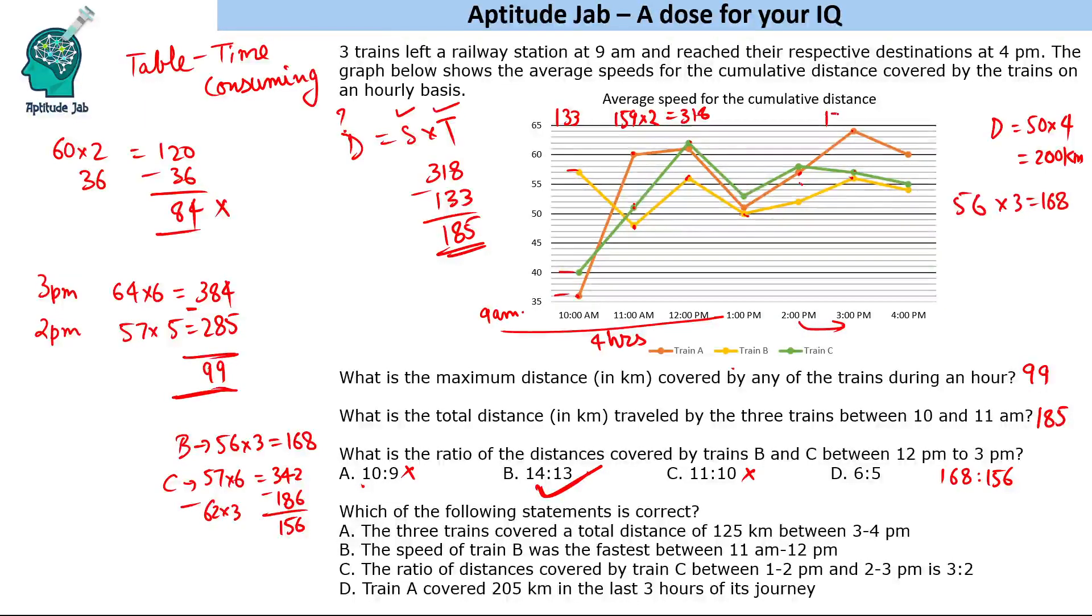This is 56, 57 - 113, and 64 is 177, into 6 hours. This is 55, 54 - 109, and 61 is 169, into 7. Instead of solving, just look at the last digit. The last digit will be 3, last digit will be 2. 3 minus 2, the last digit is 1, so this is not correct.